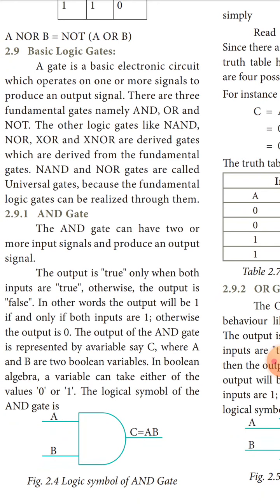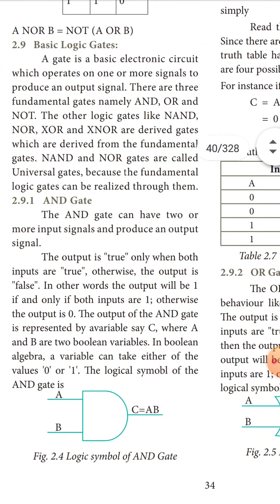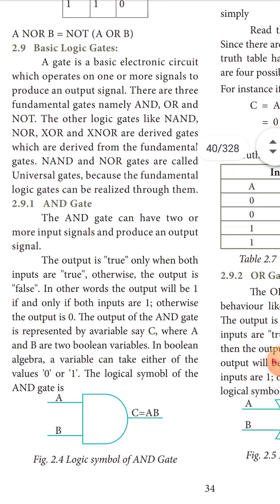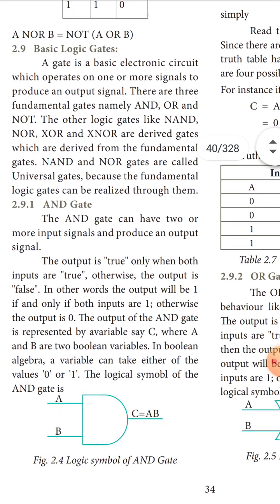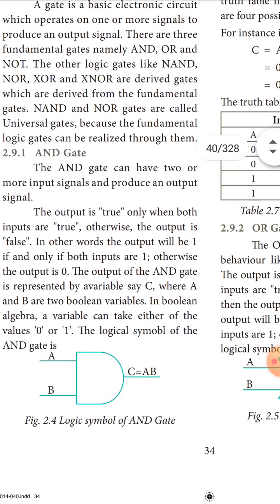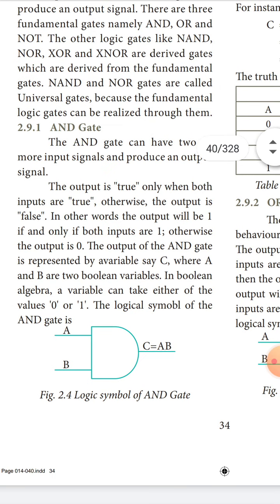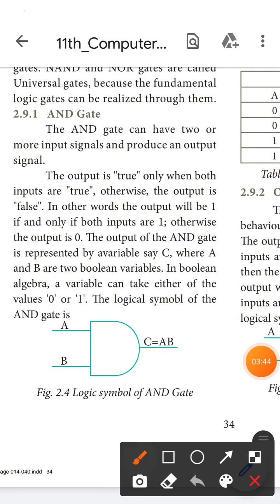First, the AND gate. The AND gate can have two or more input signals and produce one output. The output is true only when both inputs are true. In other words, the output will be 1 if and only if both inputs are 1; otherwise the output will be 0. The output of the AND gate is represented by variable C, where A and B are two Boolean variables that can take values of 0 or 1.